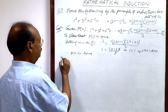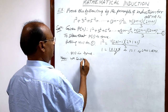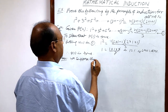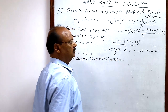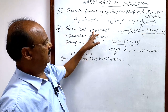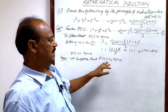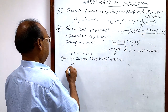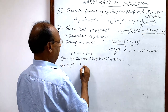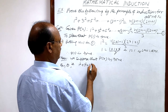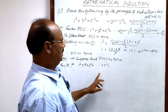Now the second step. We suppose that PR is true. In relation number 1, we put n = R to get PR. So PR is true means: 1² + 3² + 5² + ... + (2R−1)² = R(2R−1)(2R+1)/3. The last term on the left is (2R−1)².